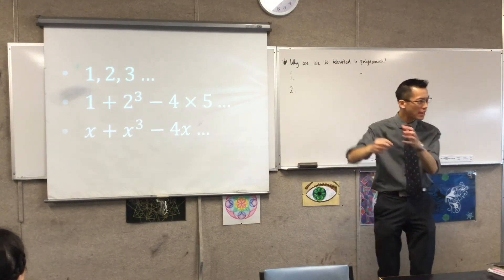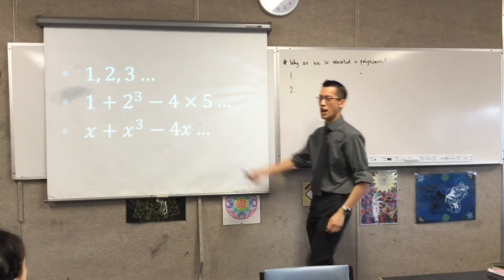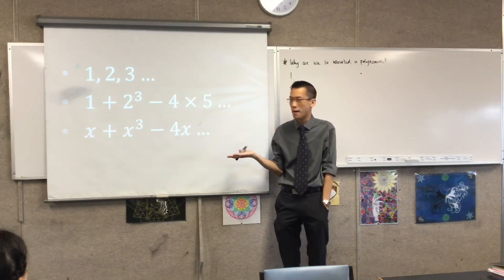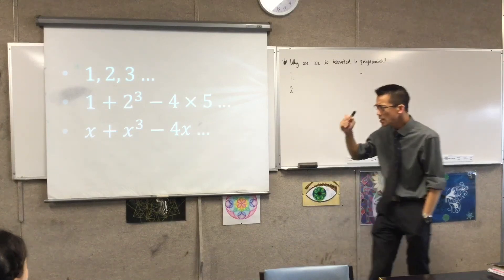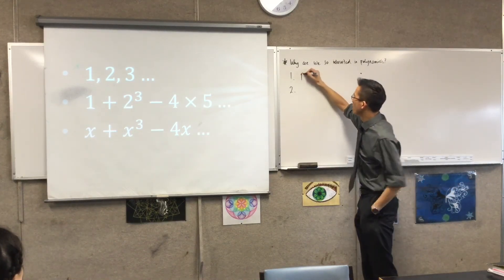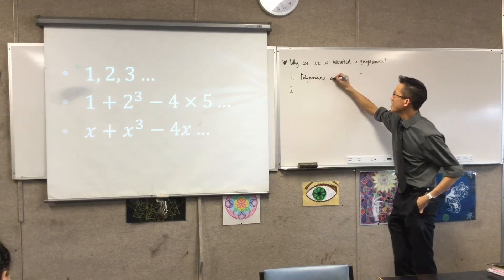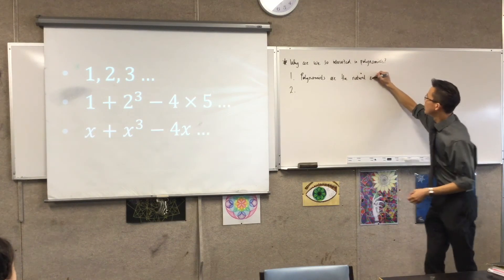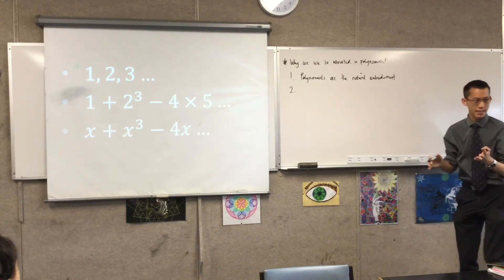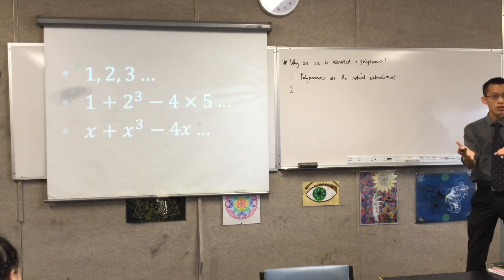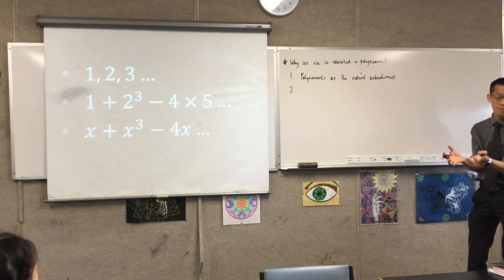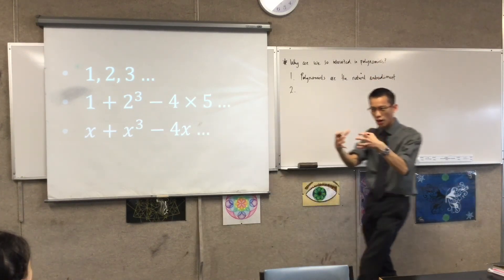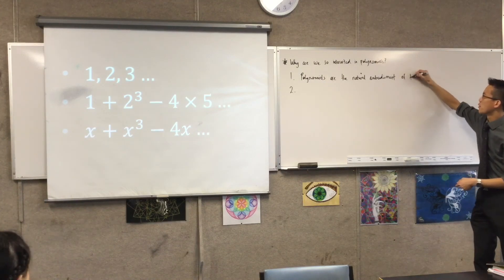It doesn't take very long. Polynomials are the natural outworking of what happens when you have numbers, you try to interconnect them, and then you wonder what happens when you don't know what the numbers are but can still label and work with them. My first internal reason is that polynomials are the natural outworking — they're the embodiment of all the rules and principles of arithmetic and algebra. If you start with those fundamentals, you're naturally led into polynomials.